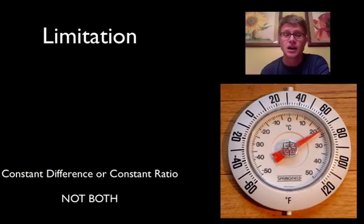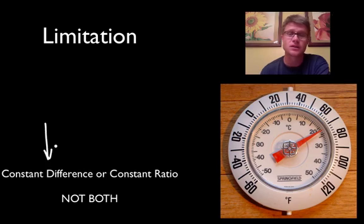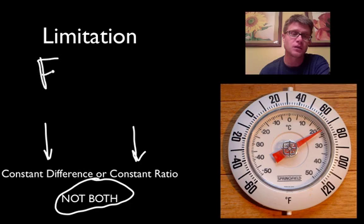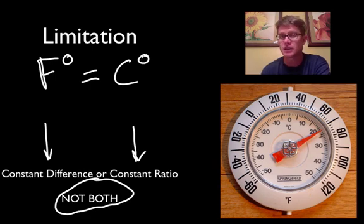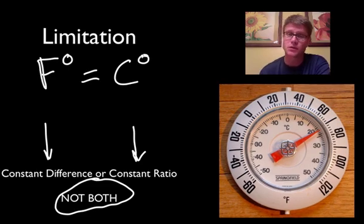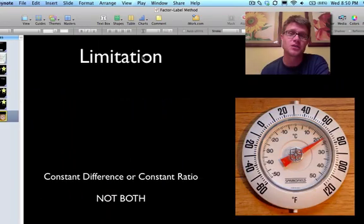Now there are a few limitations. These work really well if we have a constant difference. In other words there is always 1,609 meters in 1 mile. Or there is a constant ratio between the 2. But we can't do both of those at the same time. In other words when you are converting from Fahrenheit degrees to Celsius degrees. Remember you will have to take that times 9 fifths and then add 32. And so since you are doing two things the factor label method actually falls apart at that point. And so factor label method can solve a ton of things. But it does have a few limitations. But if you always follow those four rules then you should be good to go.